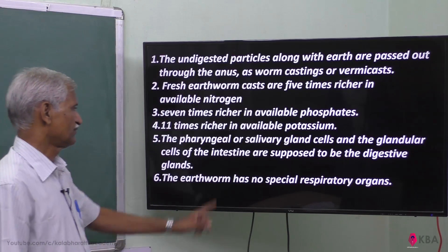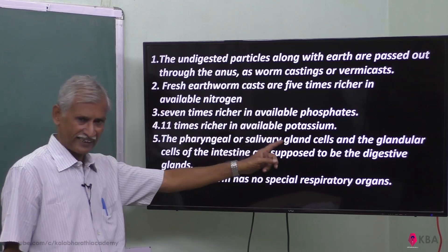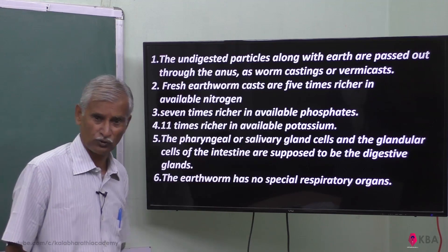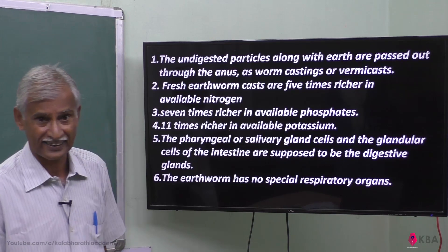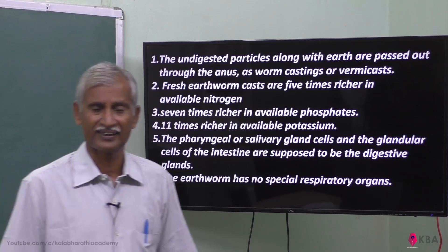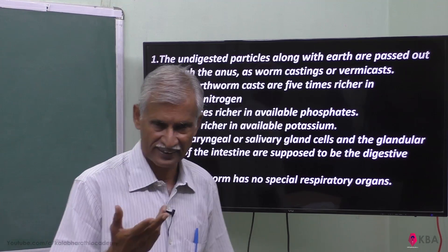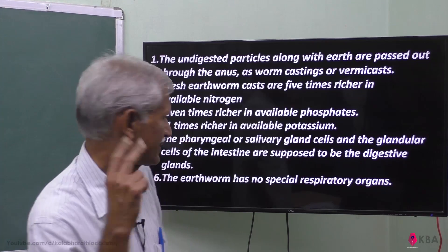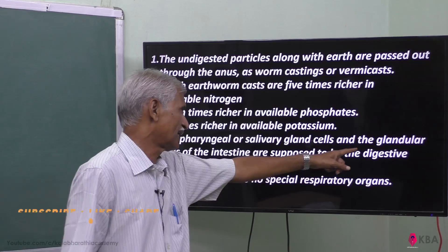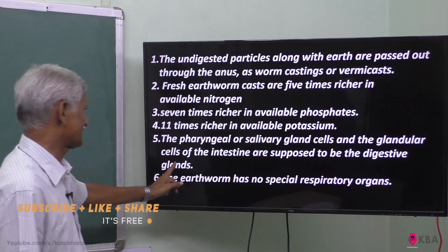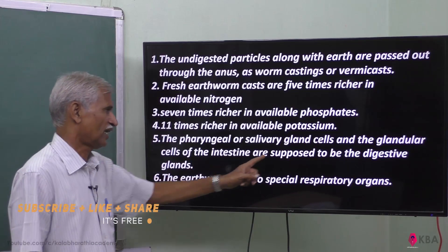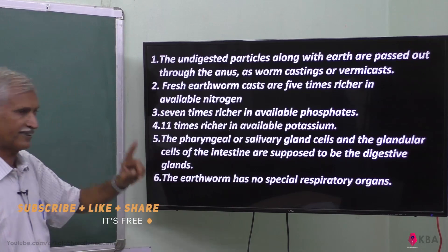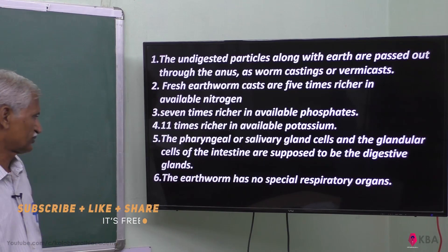The pharyngeal glands are salivary glands, and the intestinal glands and glandular cells of the intestine are the digestive glands, which produce digestive enzymes.